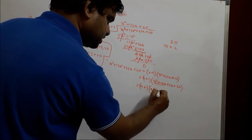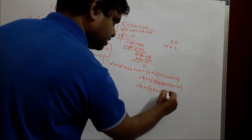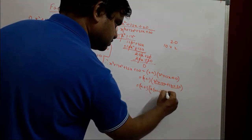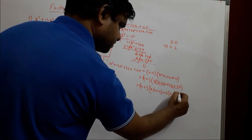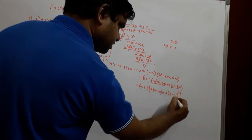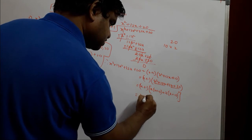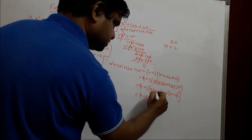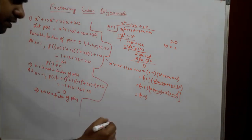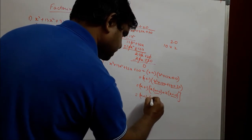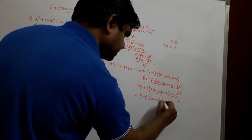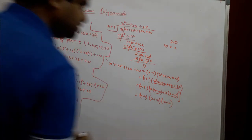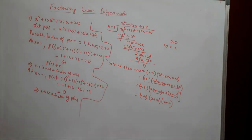We take x common from the first two terms to get x(x + 10), and 2 common from the last two terms to get 2(x + 10). Taking (x + 10) common gives (x + 10)(x + 2). So the complete factorization is (x + 1)(x + 10)(x + 2).